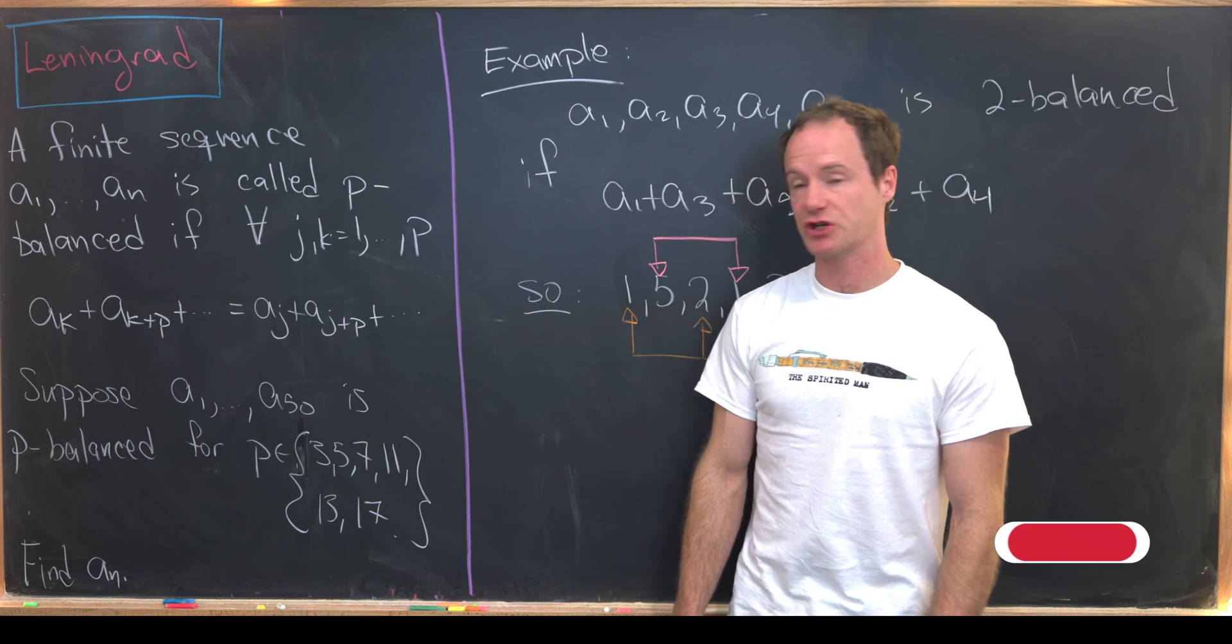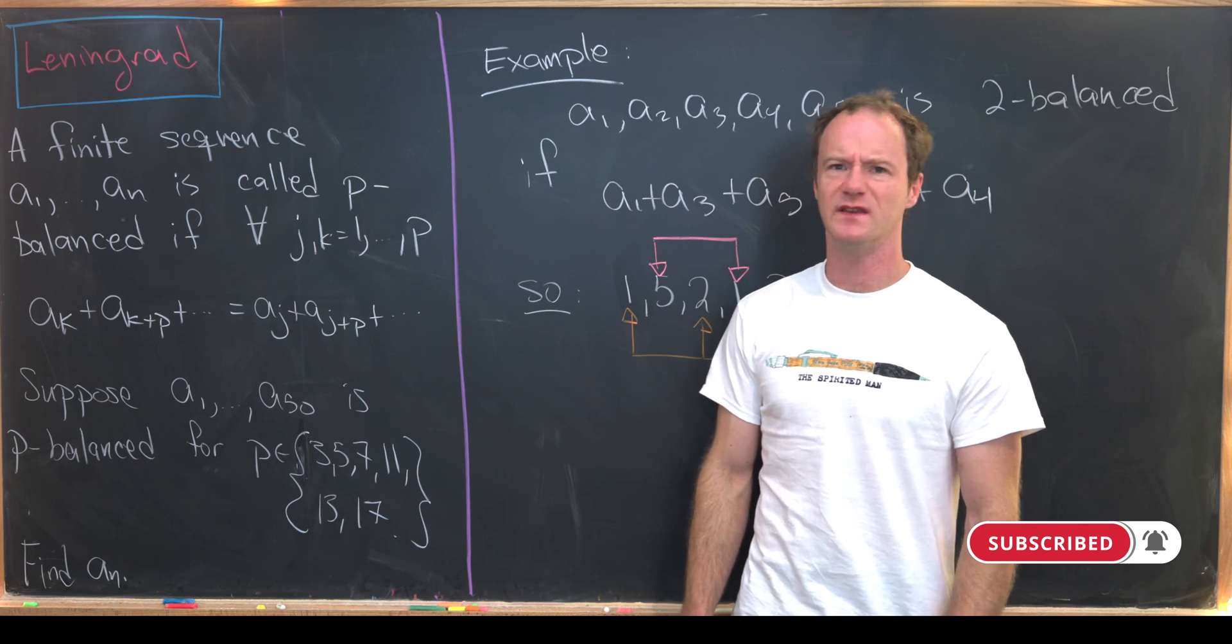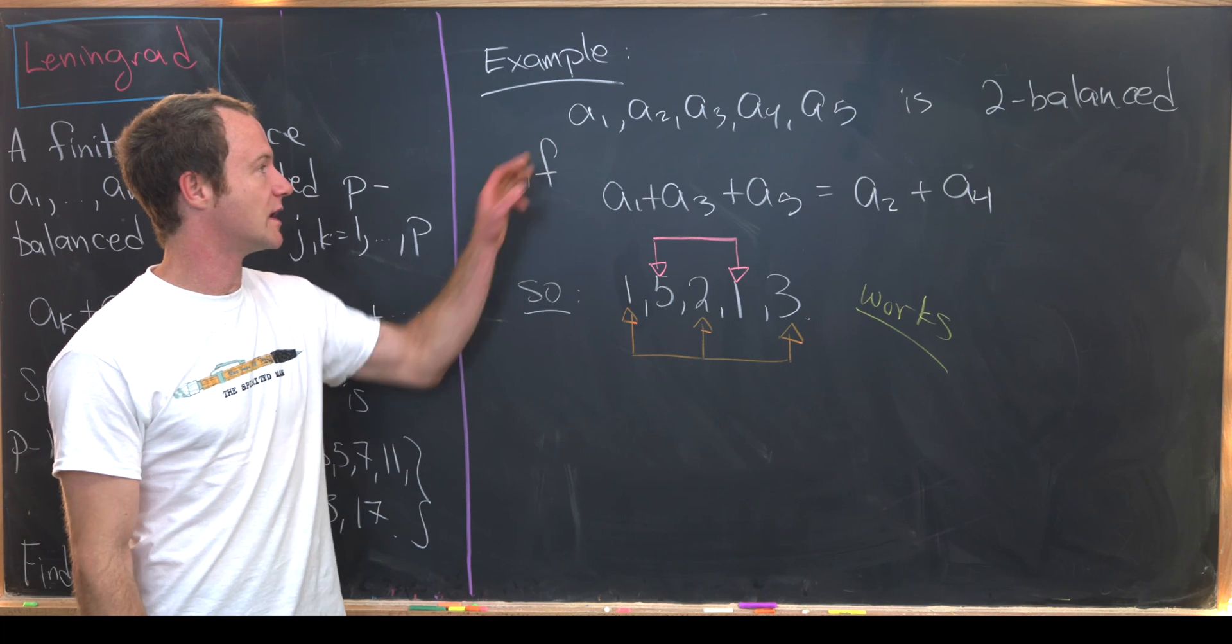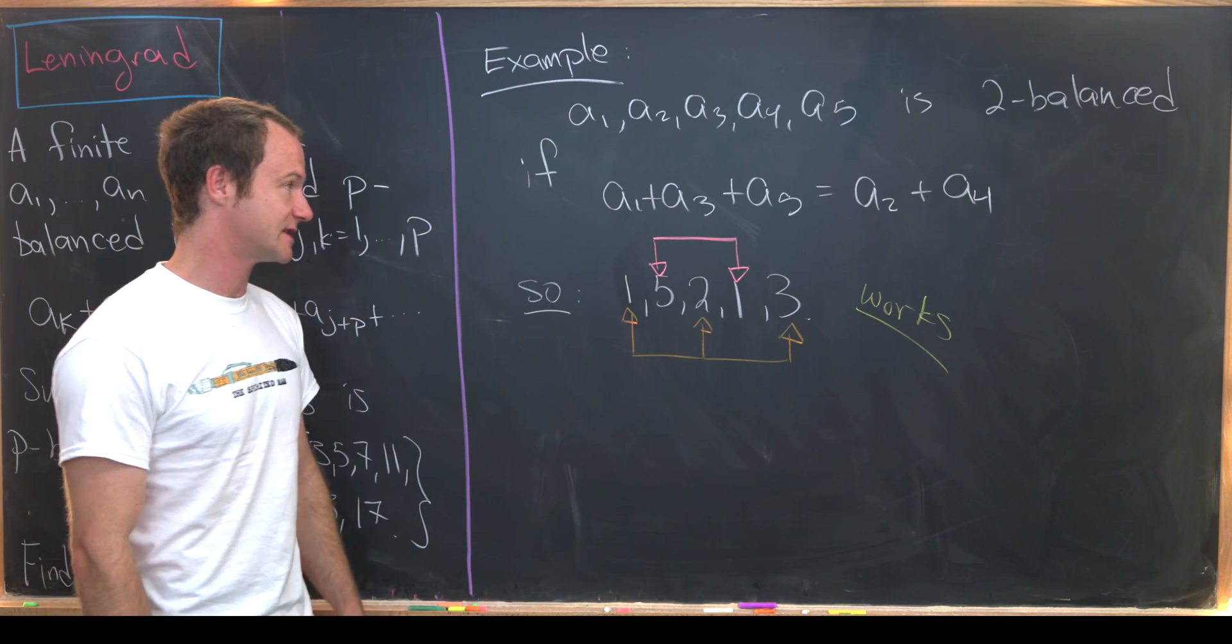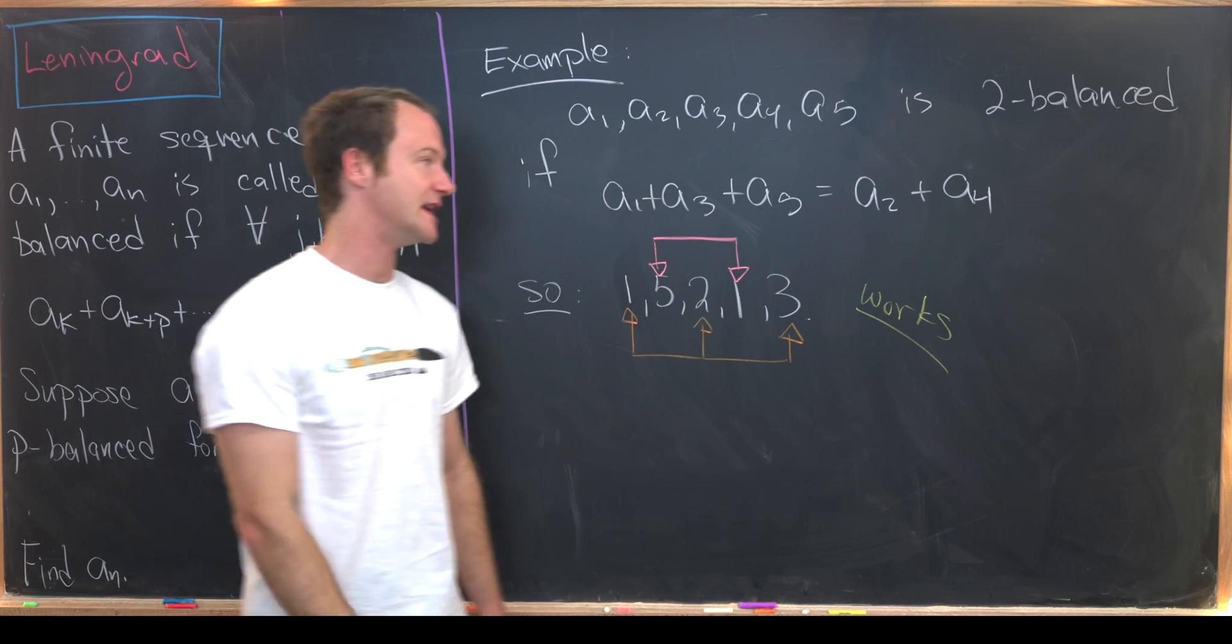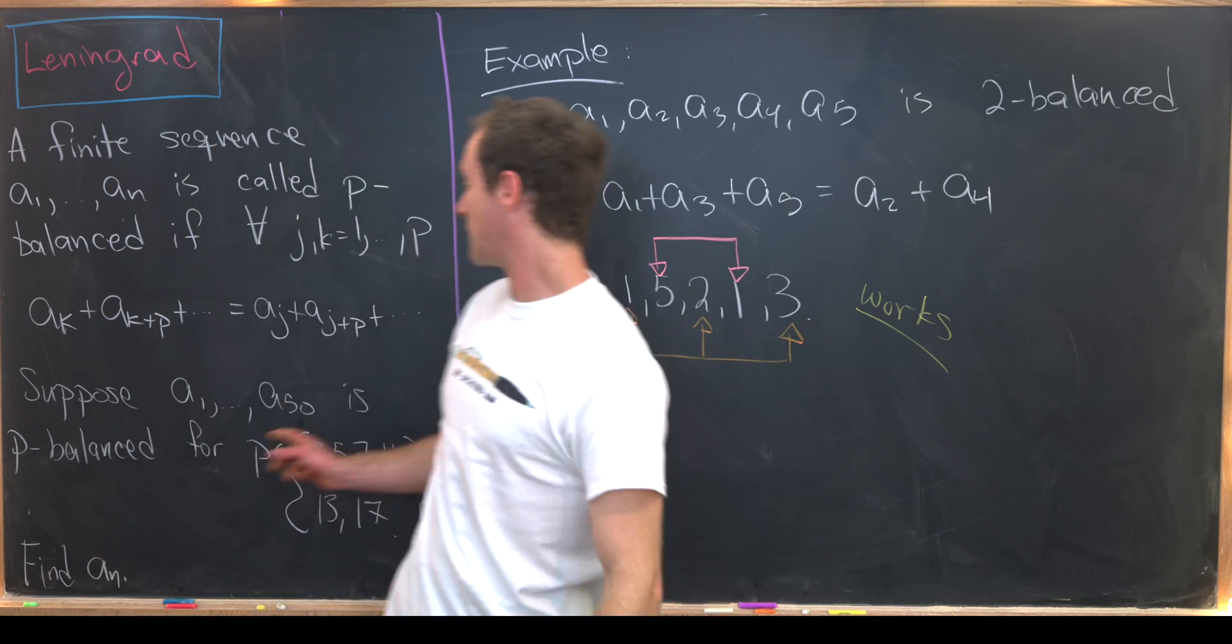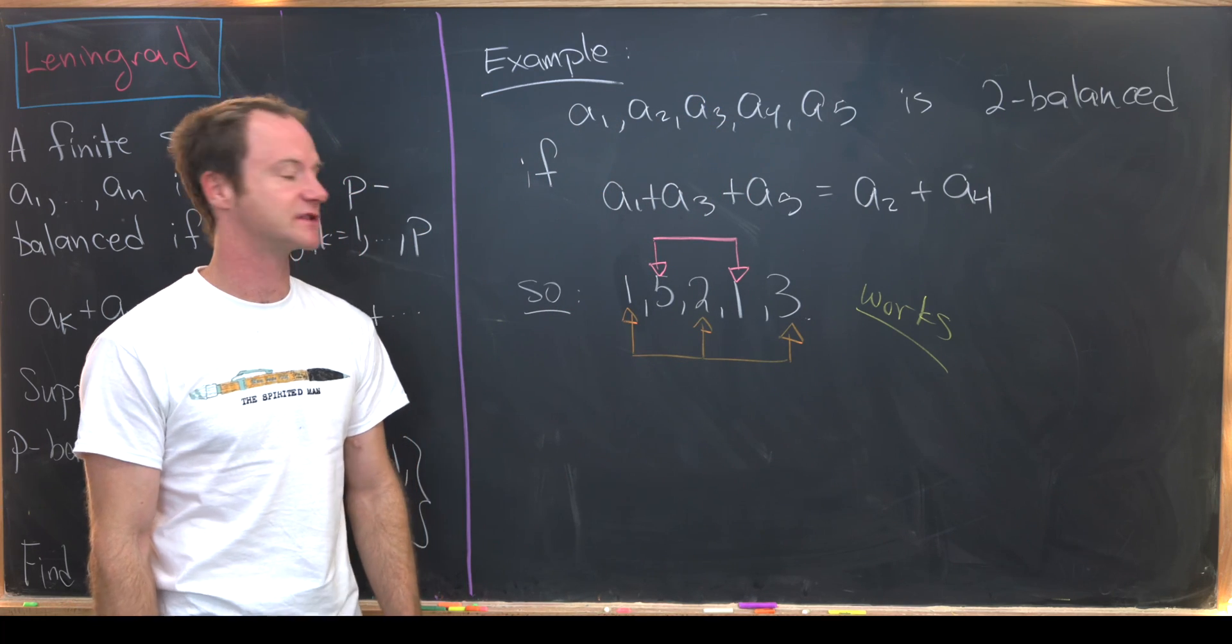Before we look at a solution I'm just going to look at a quick example to get our heads wrapped around what this notion of p-balanced is. Let's say we've got a sequence of five numbers: a1, a2, a3, a4, and a5. That's going to be 2-balanced if a1 plus a3 plus a5 equals a2 plus a4. And in fact that's the only condition. This would be like j equals 1 and k equals 2 in the language of this over here.